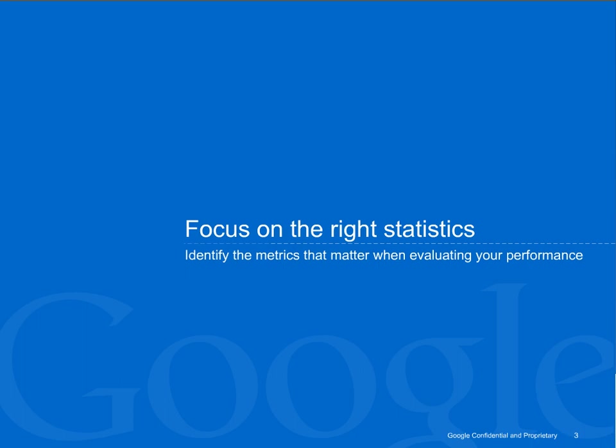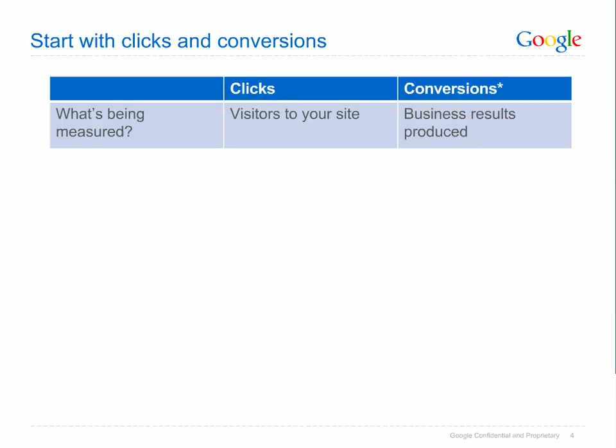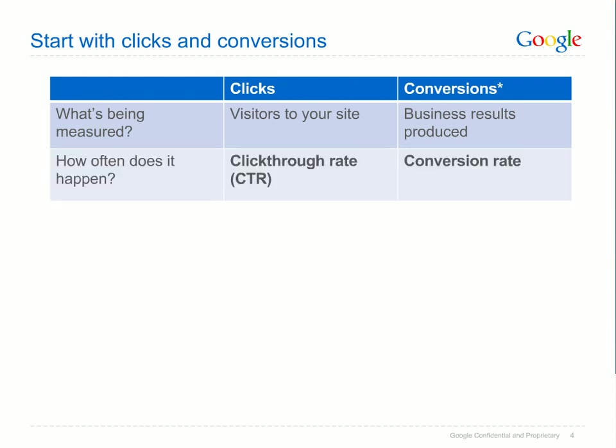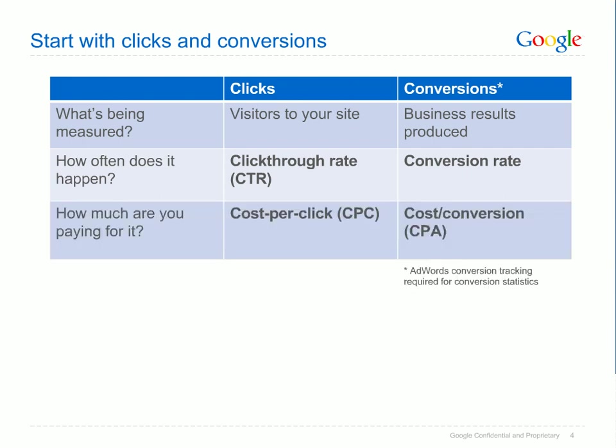First, we'll discuss AdWords statistics. Which statistics should you focus on and where do they live in your account? If, like most advertisers, you're primarily interested in the traffic and sales AdWords is bringing to your site, the two key metrics to focus on are clicks and conversions. Clicks measure the number of visitors your AdWords campaigns have brought to your site, and conversions measure the number of times your visitors have performed an action you've deemed valuable. Use click-through rate to understand how often visitors are clicking on your ads, and conversion rate to see how frequently they're converting. Finally, use your average CPC and average cost per conversion to see how much clicks and conversions are costing you.